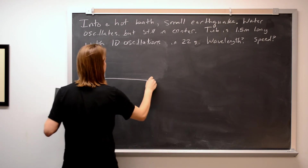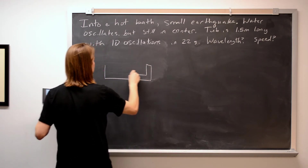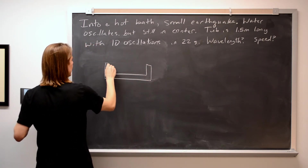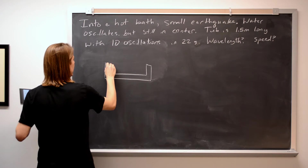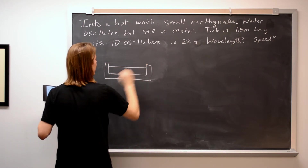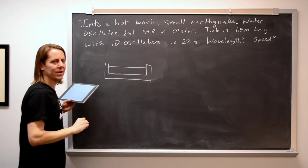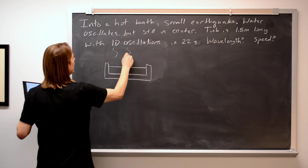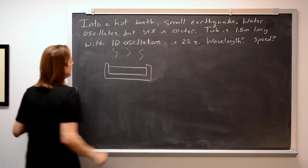So let's draw it out — when in doubt, draw it out. We're going to draw the bathtub before the waves. We just have a uniform water level — it's a hot bath, like that.